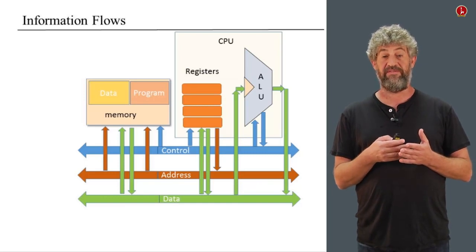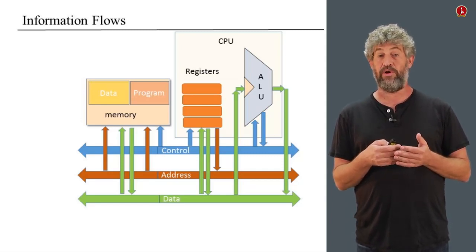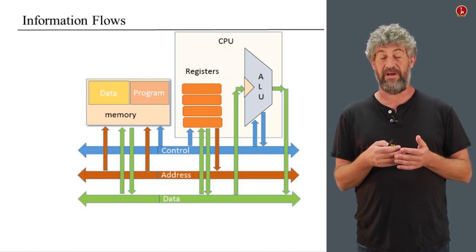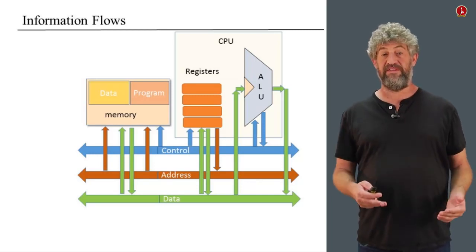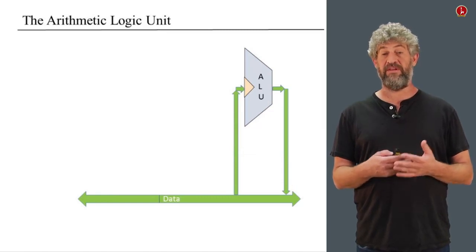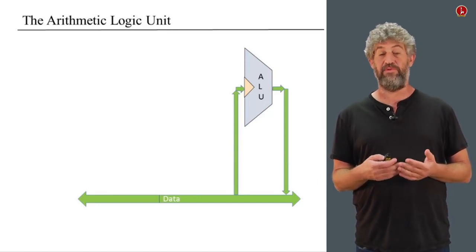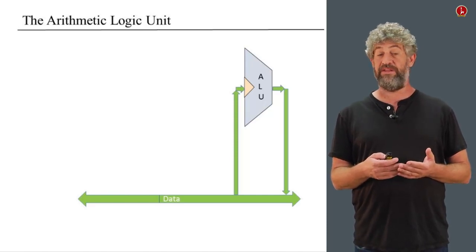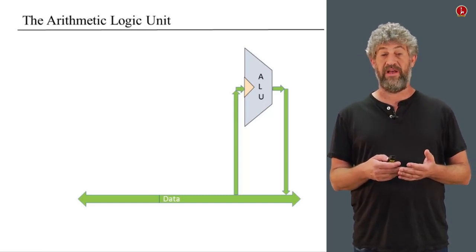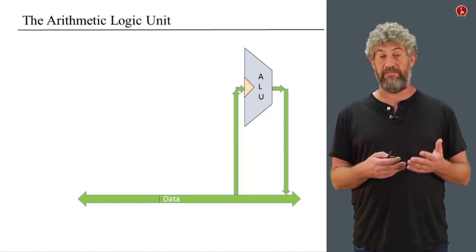Each one of these pieces of information is implemented by wires, by a set of wires sometimes called a bus. So in a typical computer we're going to have a data bus, an address bus, and the control bits are called the control bus — or sometimes just control wires. Let us start with the arithmetic logic unit. This is conceptually the simplest and clearest part of the CPU. It needs to accept numbers and add them, subtract them, and do logical operations. We simply need to have information from the data bus connect into the ALU, and then feed the output of the ALU back into the data bus, from where it goes to other places like the memory or the registers.